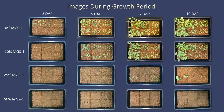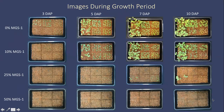Pictured here is a top view at 3, 5, 7, and 10 days after planting of the control group in the top row, followed by the 10%, 25%, and 50% concentration of Mars Global Simulant. As you can see, as the concentration of Mars Global Simulant increases, the amount of vegetative tissue decreases.